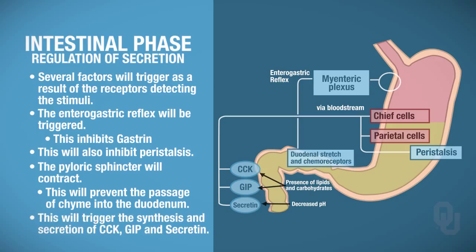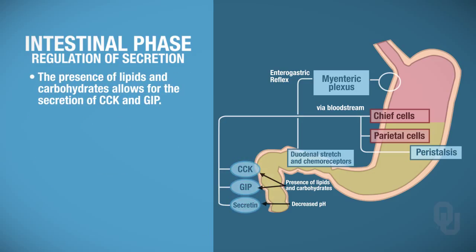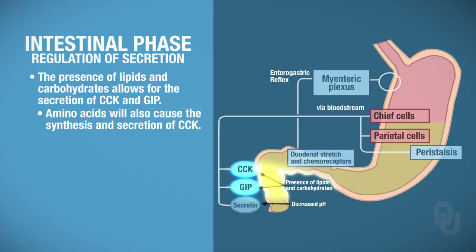This is also going to trigger the synthesis and secretion of CCK, GIP, and secretin — so we're getting three hormones synthesized and secreted in the intestinal phase. The presence of lipids and carbohydrates are going to cause the synthesis and secretion of CCK and GIP. Also causing the synthesis and secretion of CCK are amino acids.